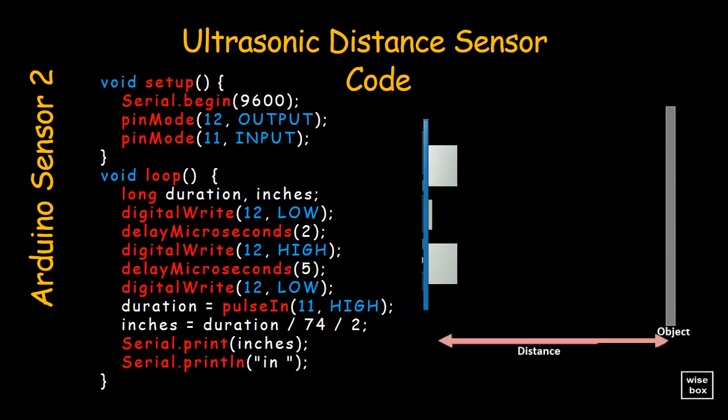Here's the code for the ultrasonic sensor project. The Arduino triggers the sensor by sending a pulse to the speaker. The speaker in turn sends an ultrasonic burst of sound.